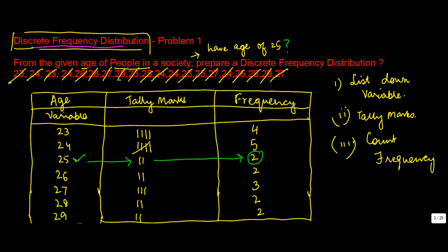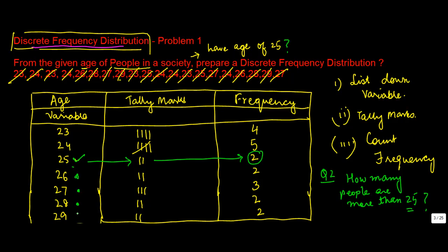Second question: how many people are more than 25? Anyone in the age of 26, 27, 28, and 29 is more than 25. So I add up all the frequencies of people in those four age groups, which is 2 plus 3 plus 2 plus 2, which equals 10.